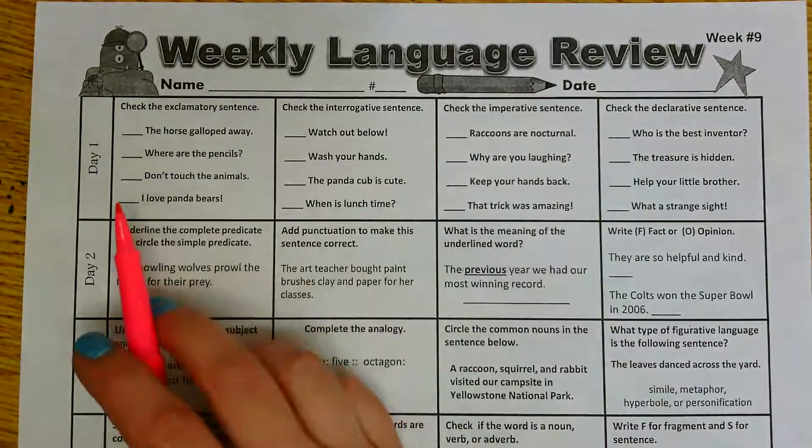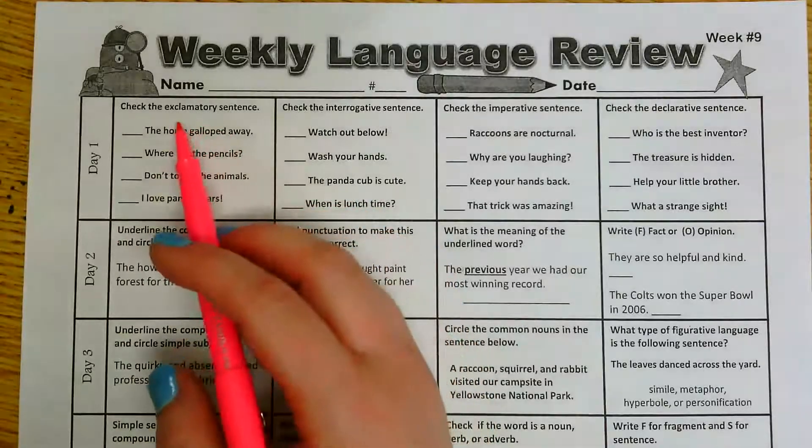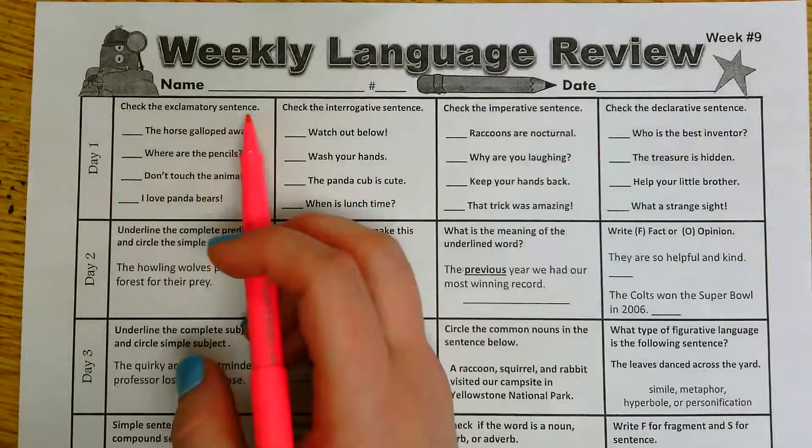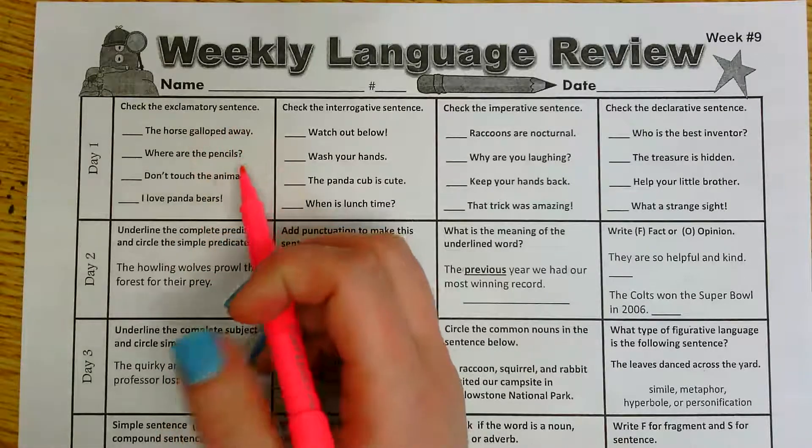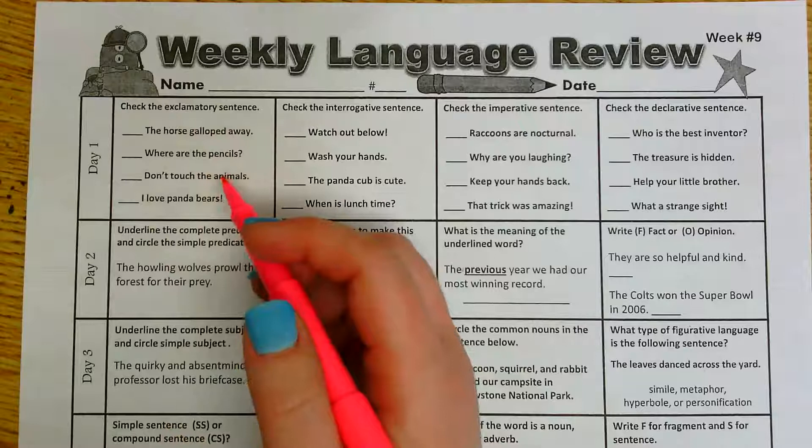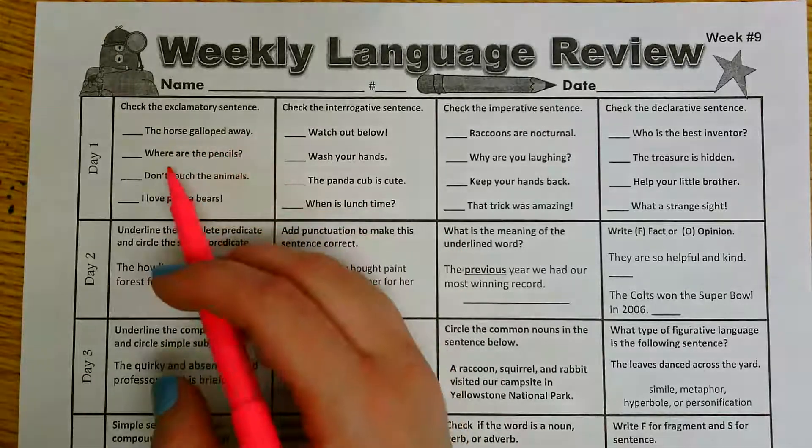Alright, so with day one or what you should have completed on Monday, the first box says check the exclamatory sentence. Well, I know that an exclamatory sentence is going to be something that has very strong emotion and it's going to end with an exclamation mark. So I have the horse galloped away, where are the pencils, don't touch the animals, or I love panda bears.